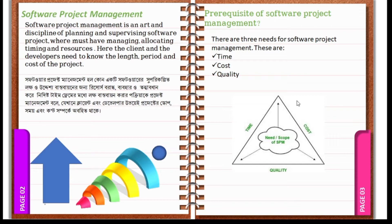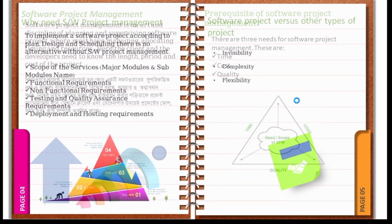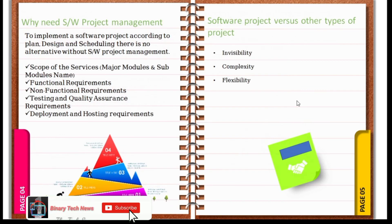Pre-requisite of software project management: what is software project management and what are the prerequisites? There are three needs for software project management. Those are time, cost, and quality. This is the most important part of software project management.